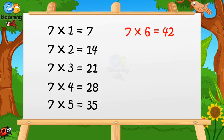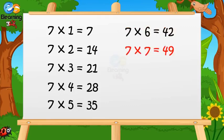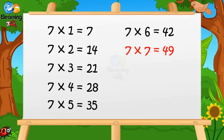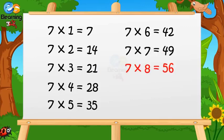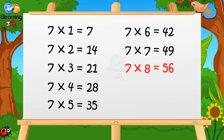7 sixes are forty-two. 7 sevens are forty-nine. 7 eights are fifty-six.